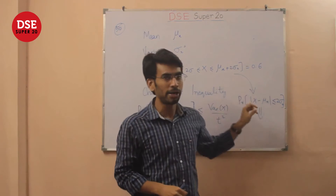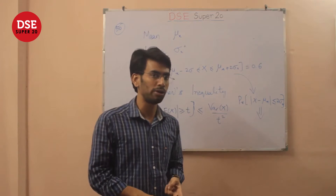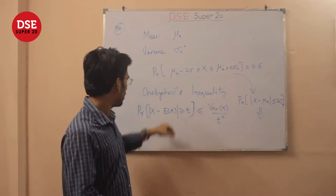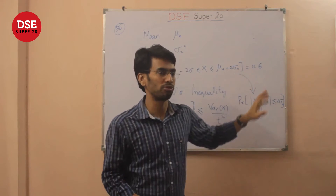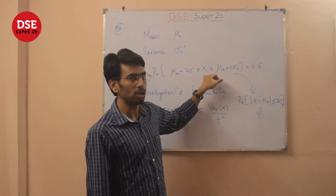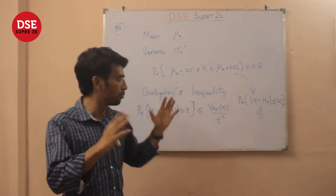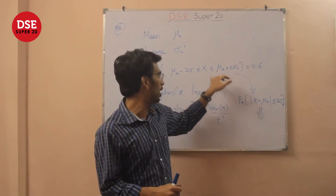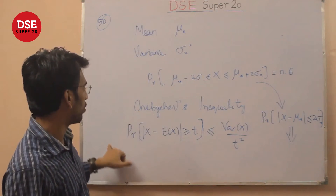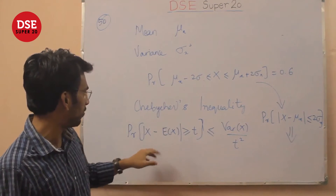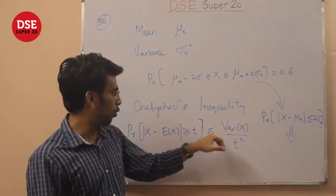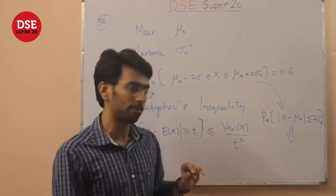The first thing that should come to mind is the two inequalities: Markov's inequality and Chebyshev's inequality. Using Chebyshev's inequality, we can show this is not possible because 0.6 is too low a probability for any random variable to take within this range. Chebyshev's inequality states that P(|x − E[x]| > t) ≤ Var(x) / t².